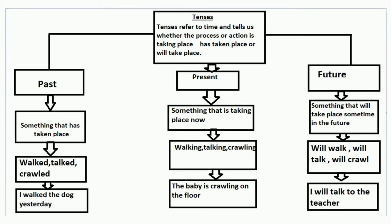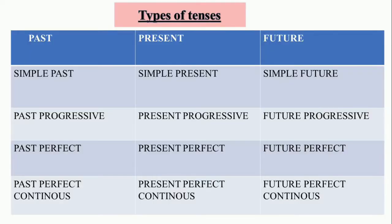Towards the left of the chart, past tense is given. In the mid portion, present tense is given. The future tense is given towards the right side of the chart. In order to show at what stage an action is, each of the three tenses has been subdivided into four heads. These subdivisions are simple, progressive, perfect, and perfect continuous.